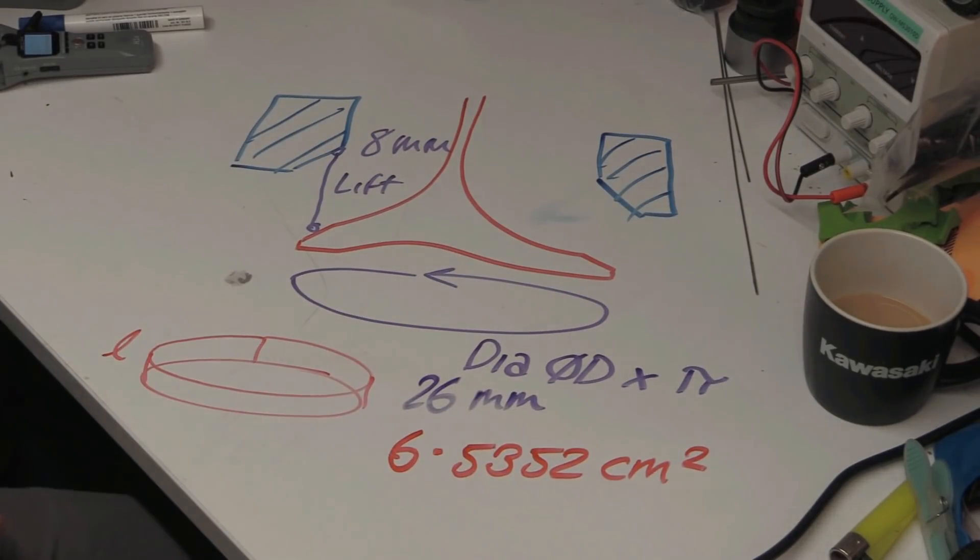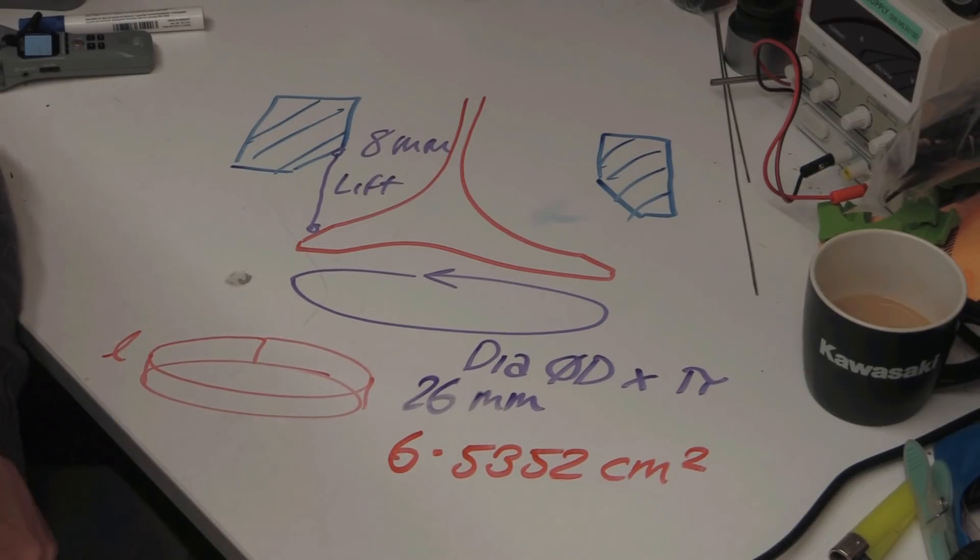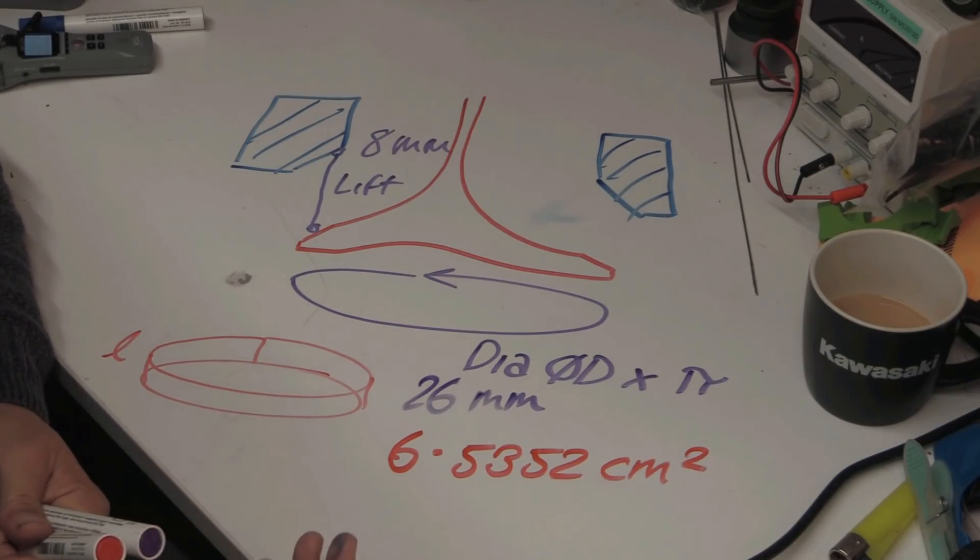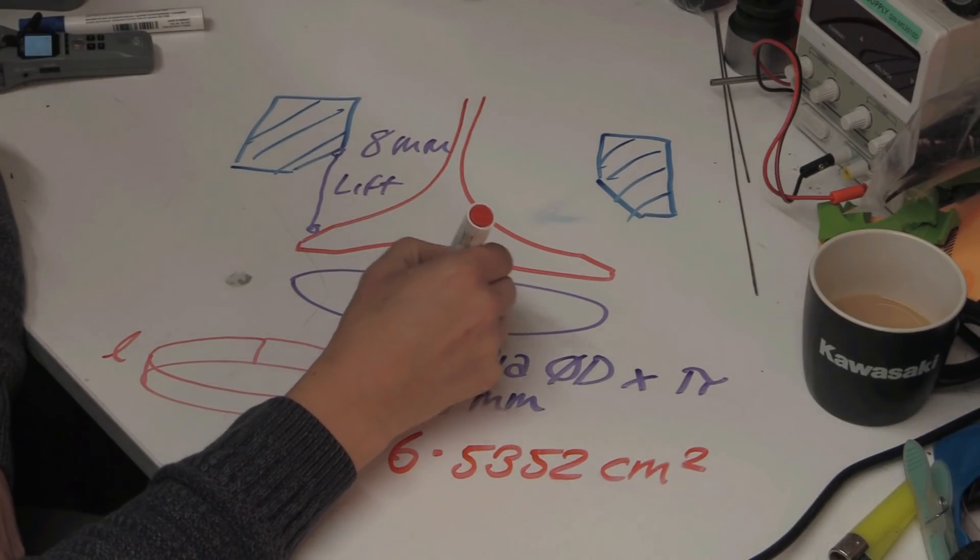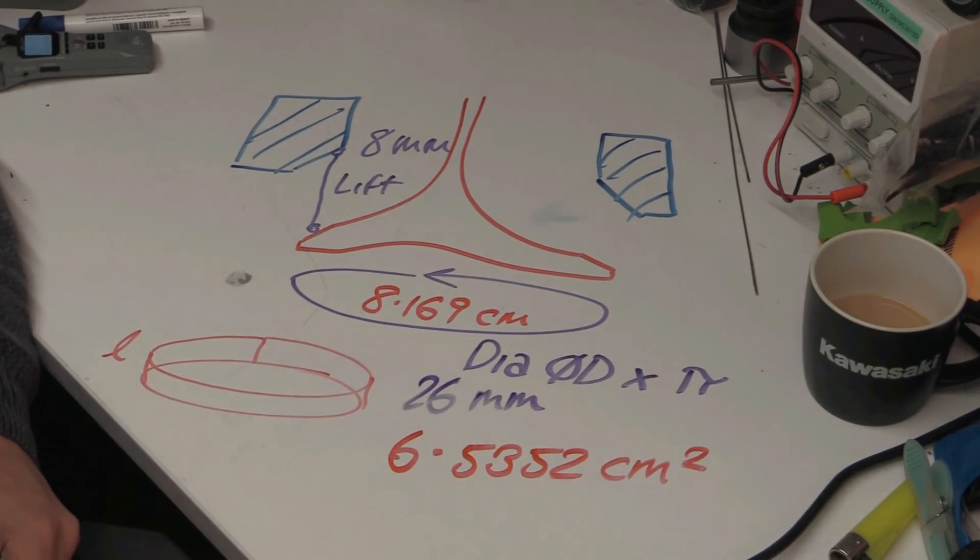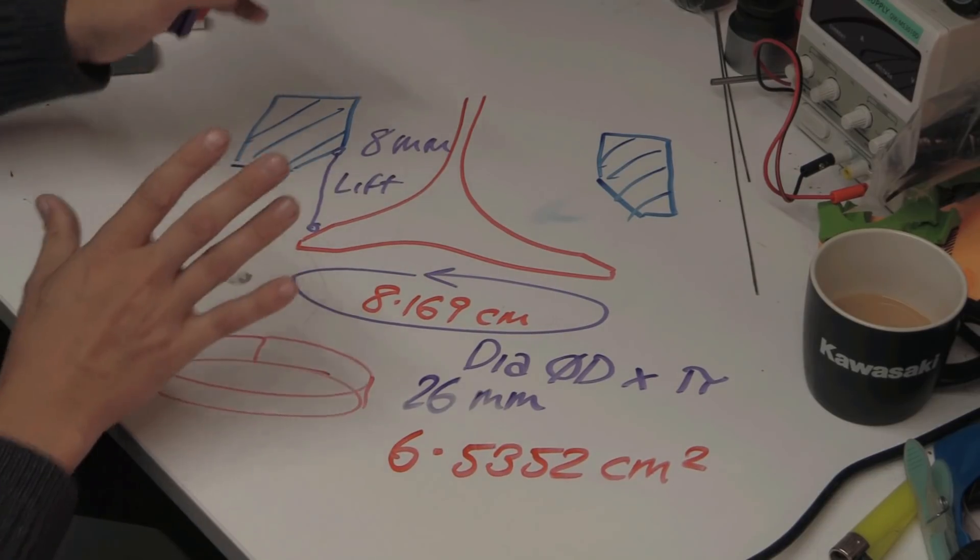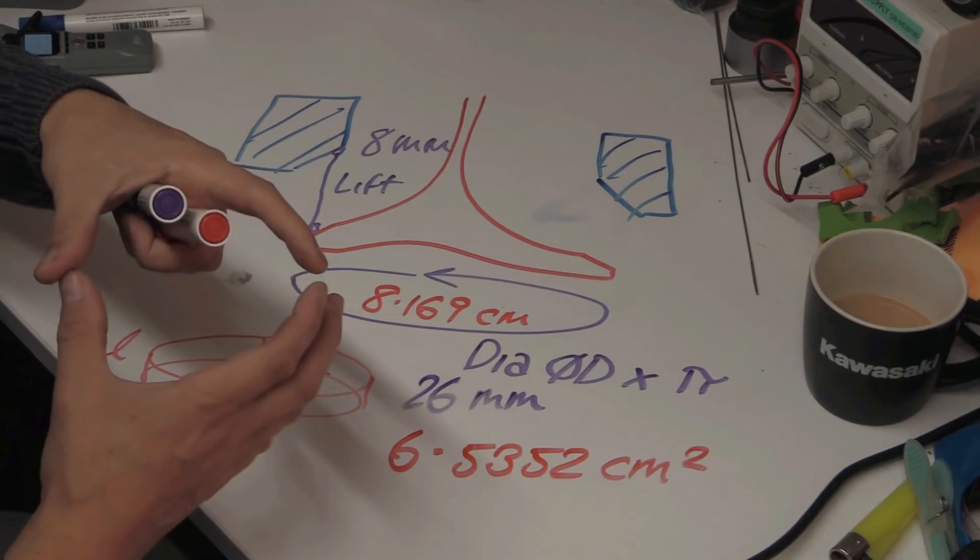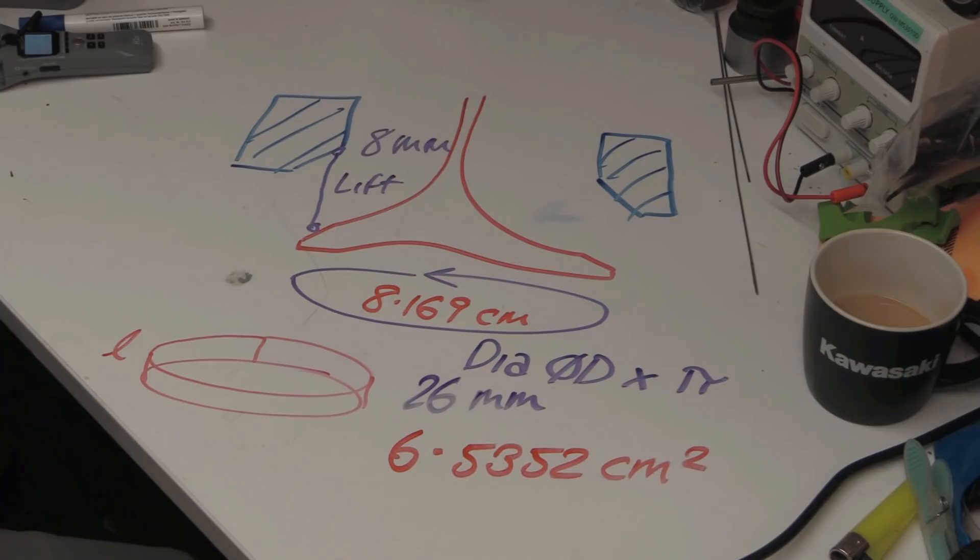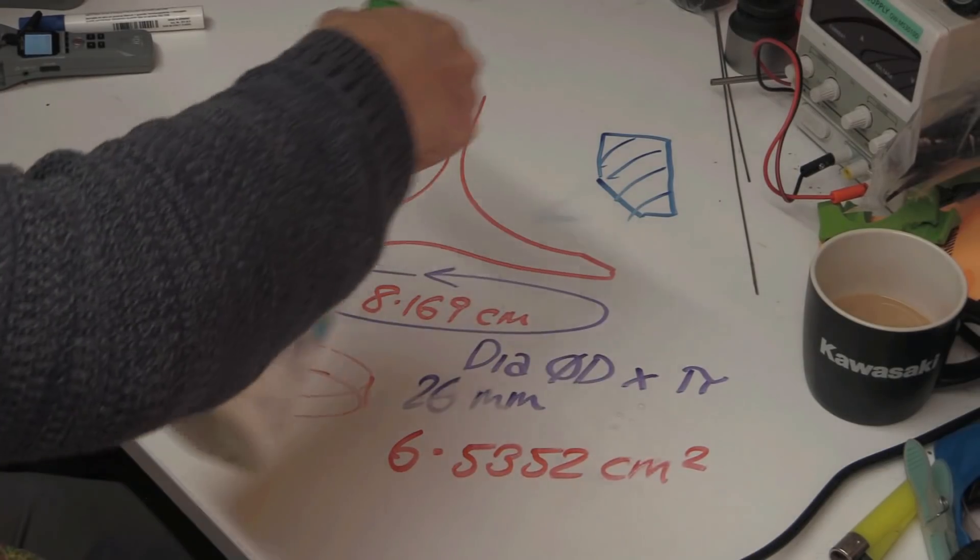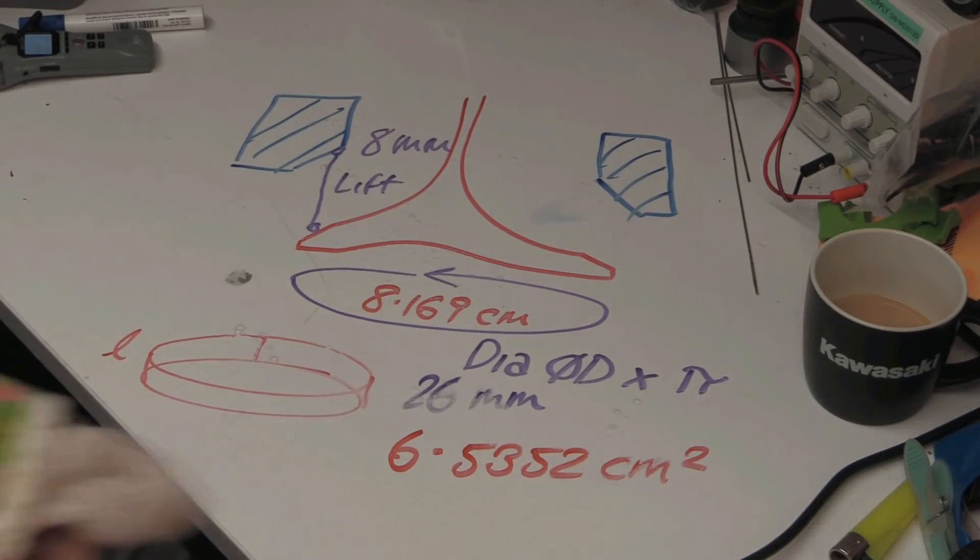When I do that and times the circumference by the area, the circumference for this is 8.169 centimeters. Once I do this, I can work out that and then look at my port diameters and work out all my... well, it's not that simple. Let me explain why it's not that simple. It's actually really difficult.